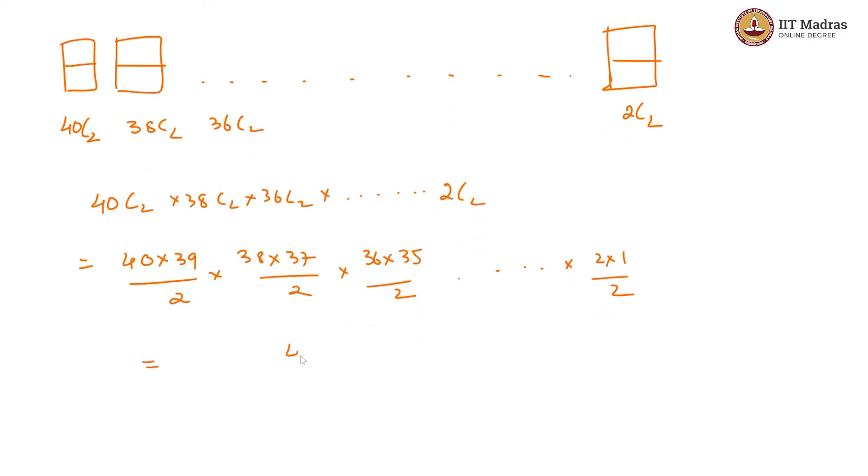So, this will give us 40! / 2^20. So, this is the total ways of being able to fill these rooms.